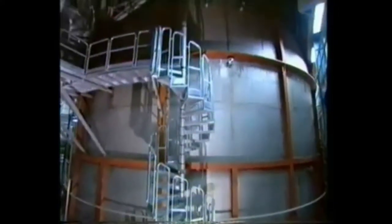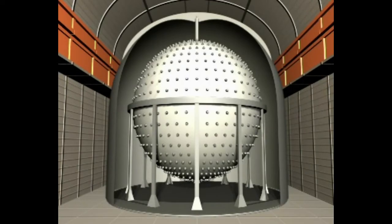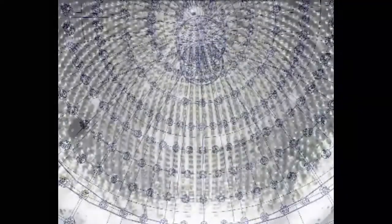It consists of a big steel sphere with 2,200 phototubes, extremely sensitive eyes, able to capture photons emitted by the rare interactions of neutrinos with the liquid inside the sphere.